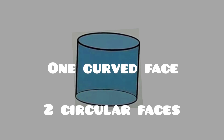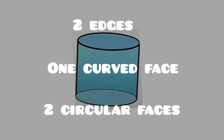The cylinder has two circles on top and bottom, so the cylinder has three faces in total. It has no corners, and it has two edges.